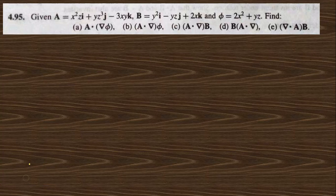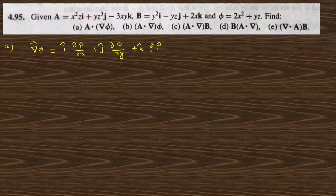First, we need to find grad φ. Grad φ is nothing but i-cap (∂φ/∂x) plus j-cap (∂φ/∂y) plus k-cap (∂φ/∂z). So i-cap (∂φ/∂x): taking the partial derivative with respect to x gives 4x. This becomes 4x i-cap plus j-cap: the partial with respect to y gives z, and with respect to z this gives y.